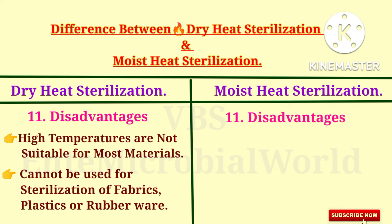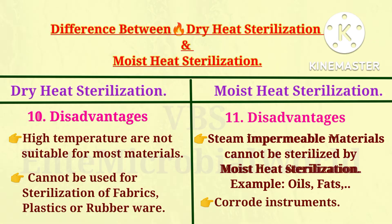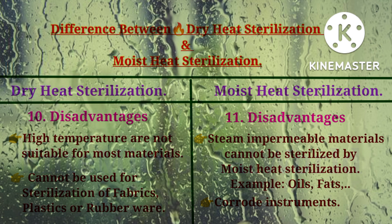Disadvantages of moist heat sterilization: Steam-impermeable materials cannot be sterilized by moist heat sterilization — for example, oils and fats. Moist heat sterilization will corrode instruments. This is because the instruments remain wet after sterilization.